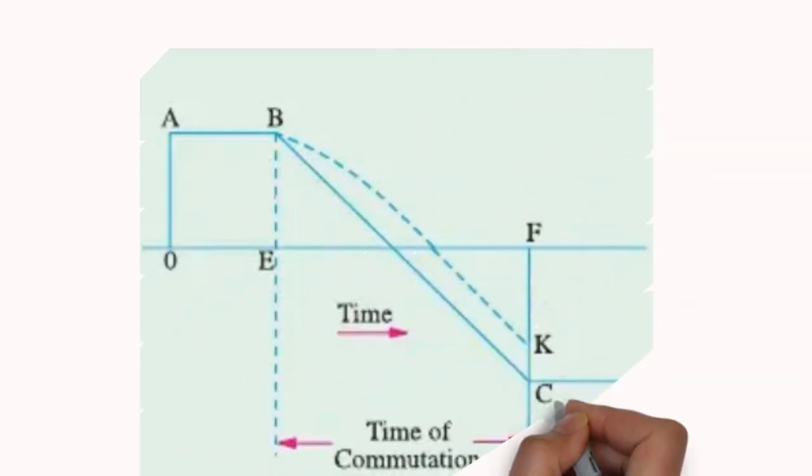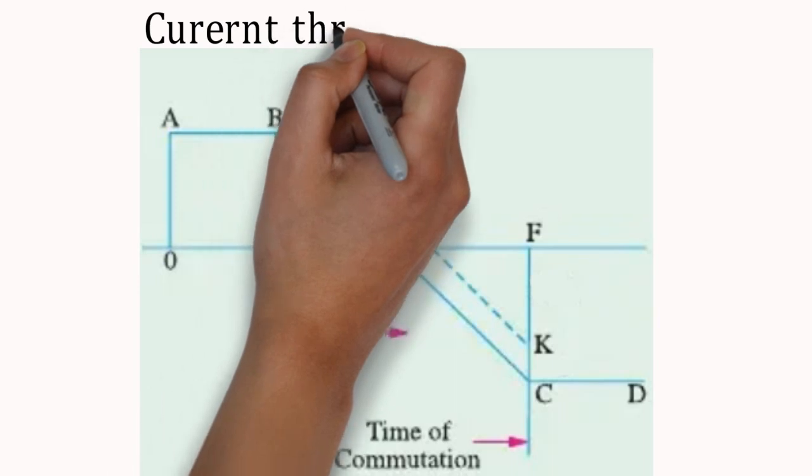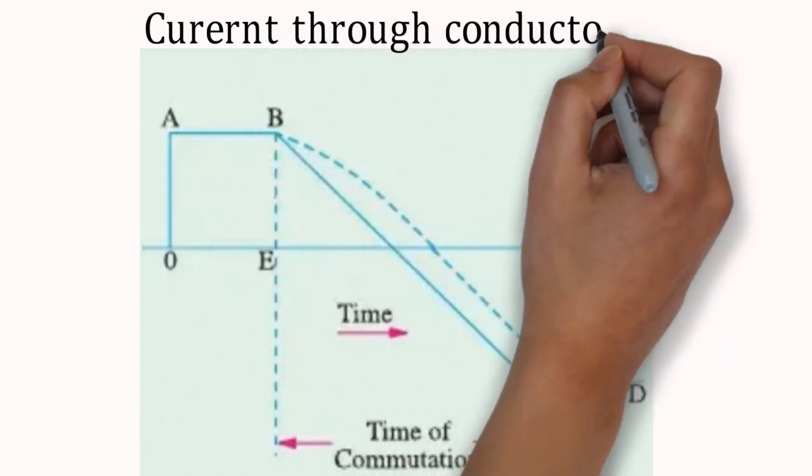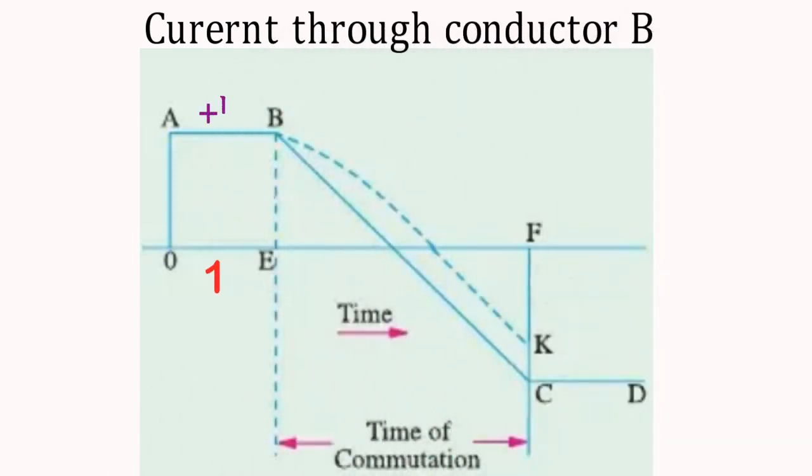This commutation process can be understood nicely in graphical representation. Here, all the 5 positions and value of current is mentioned. From this, we can see that current is varying as position of brush is getting changed, and after completion of 5 steps, current is reversed.